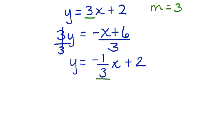Now we have two different slopes, and we can multiply them. We multiply 3 times negative 1 third, and we end up with negative 3 over 3, which simplifies to negative 1. These two lines are perpendicular.